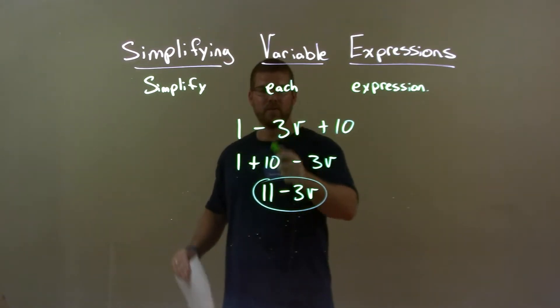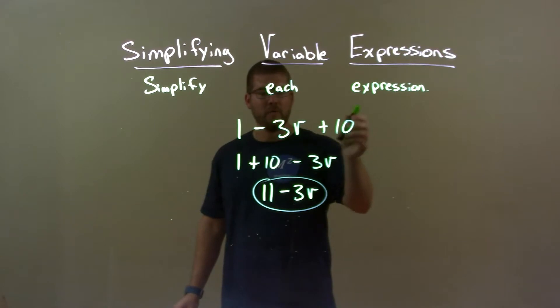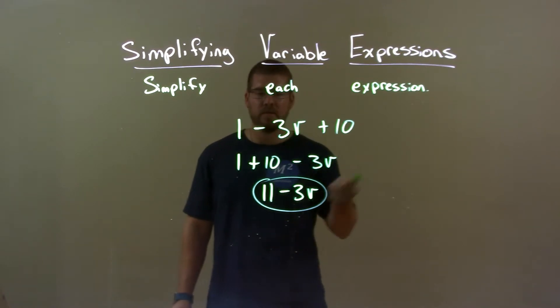Quick recap, we're given 1 minus 3V plus 10 and we had to simplify. Well, I rearranged my like terms together then combined them. 1 plus 10 is 11, minus 3V just comes down.